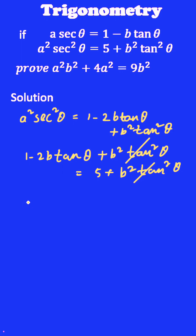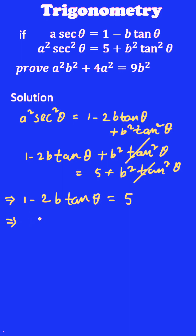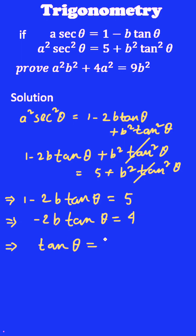So the equation becomes 1 - 2b·tanθ equal to 5. So -2b·tanθ is equal to 5 - 1, that is 4. So tanθ equals 4 divided by -2b, which equals -2/b.